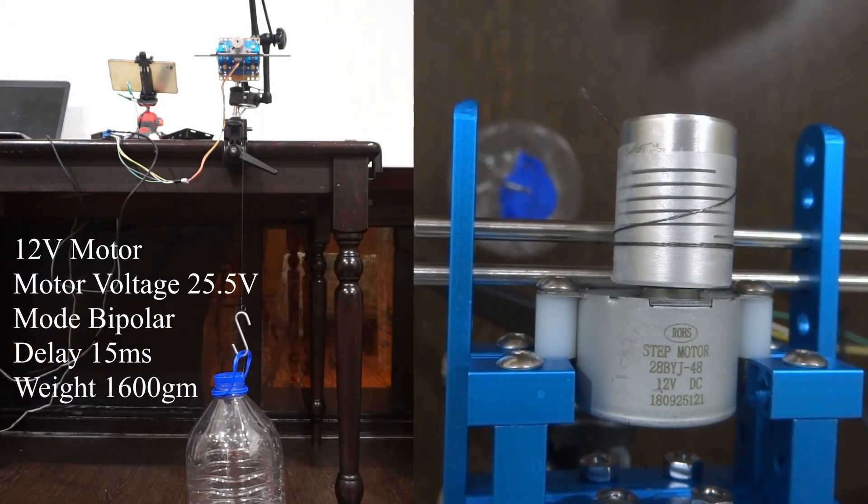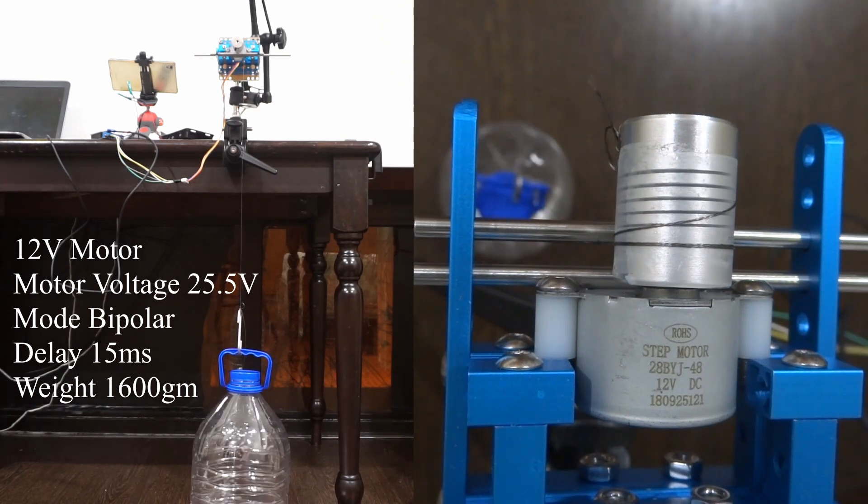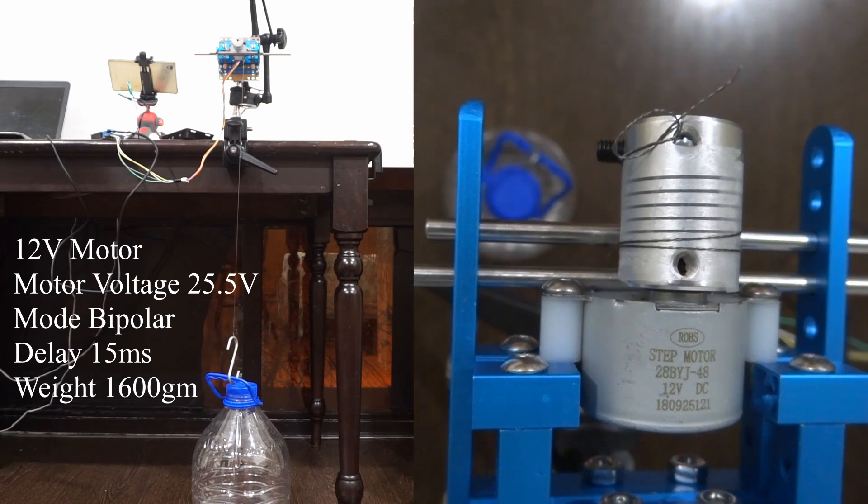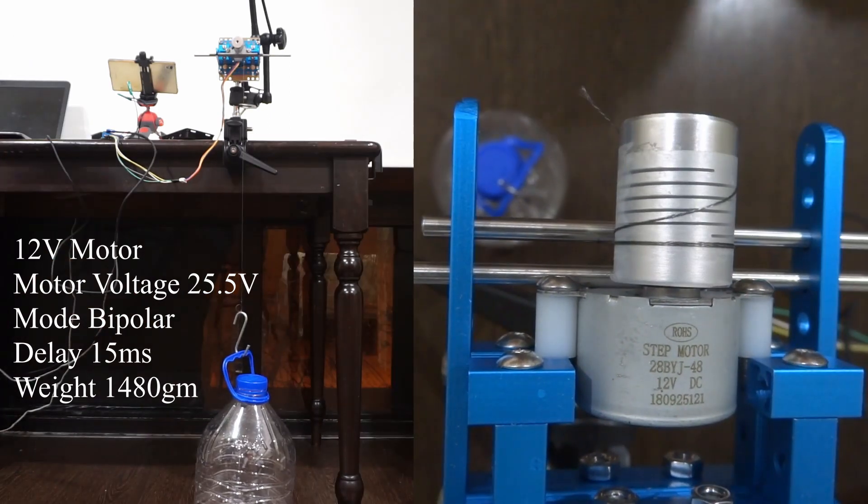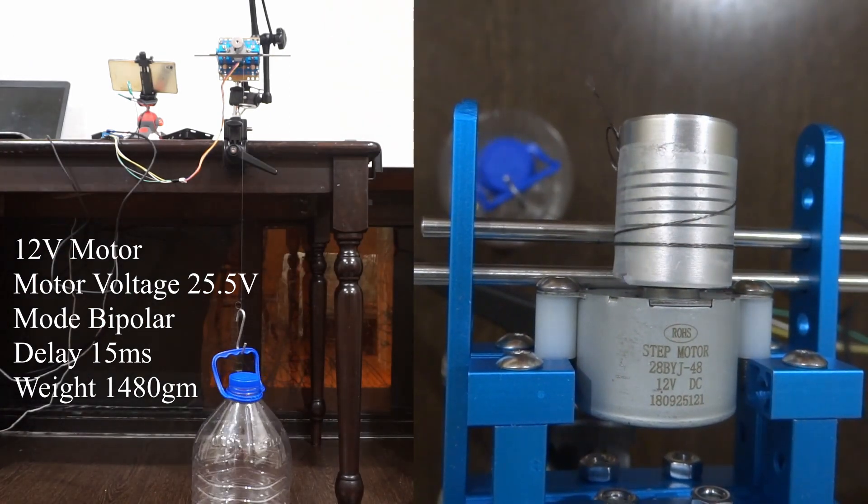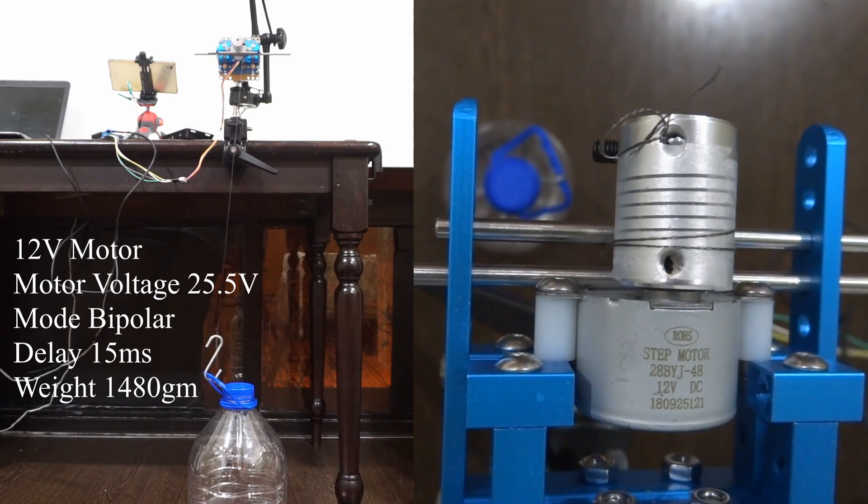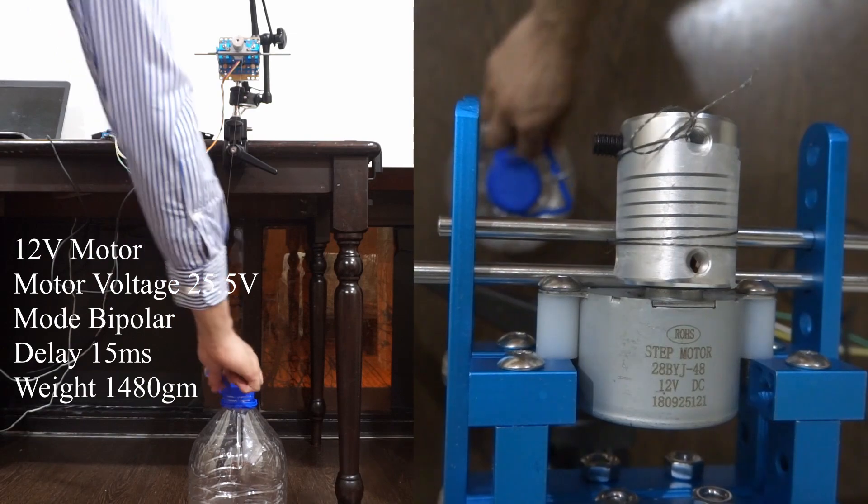It is not able to lift that. The weight of the bottle is now 1.48kg. It is not able to lift that which it was successfully able to lift when we began the test. This means that something is giving up over time.